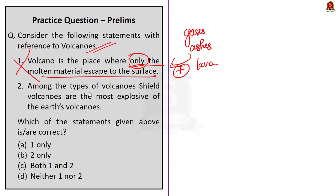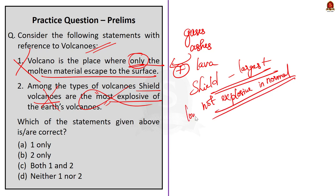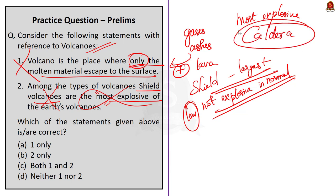The second statement says among the types of volcanoes, shield volcanoes are the most explosive of the earth's volcanoes. This is incorrect because shield volcanoes are the largest of all volcanoes on the earth but they are not explosive — they become explosive only if water gets into the vent. Otherwise they are characterized by low explosivity. The most explosive of earth's volcanoes is the caldera, because they are so explosive that when they erupt, they tend to collapse on themselves rather than building any tall structures. So the answer here is option D — neither one nor two.